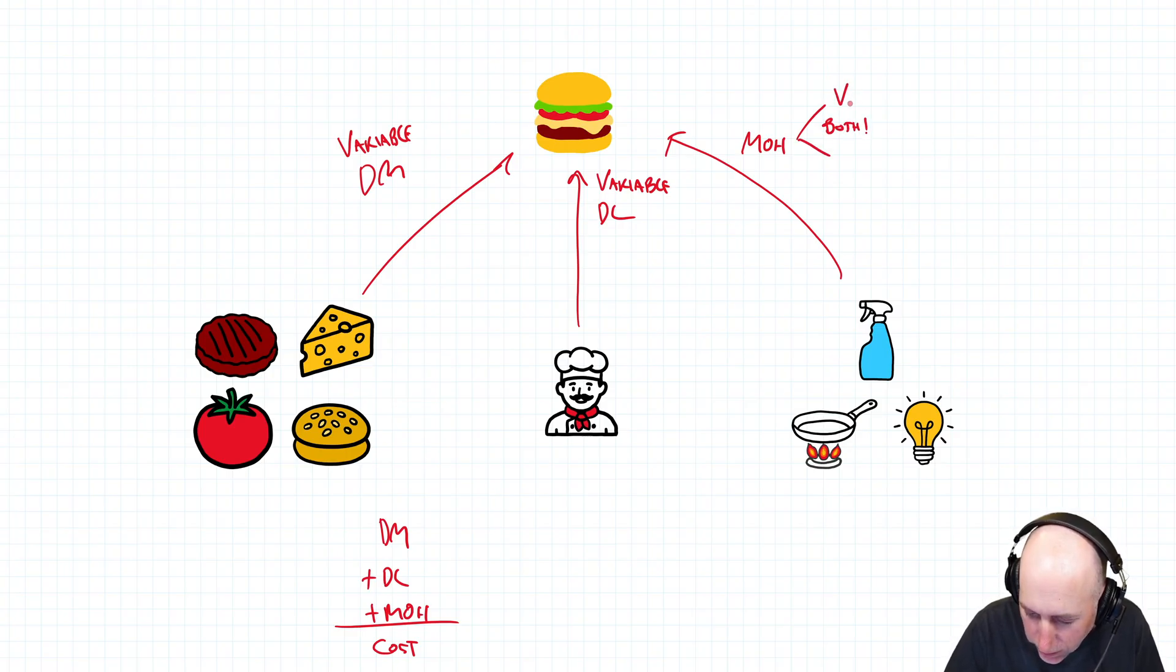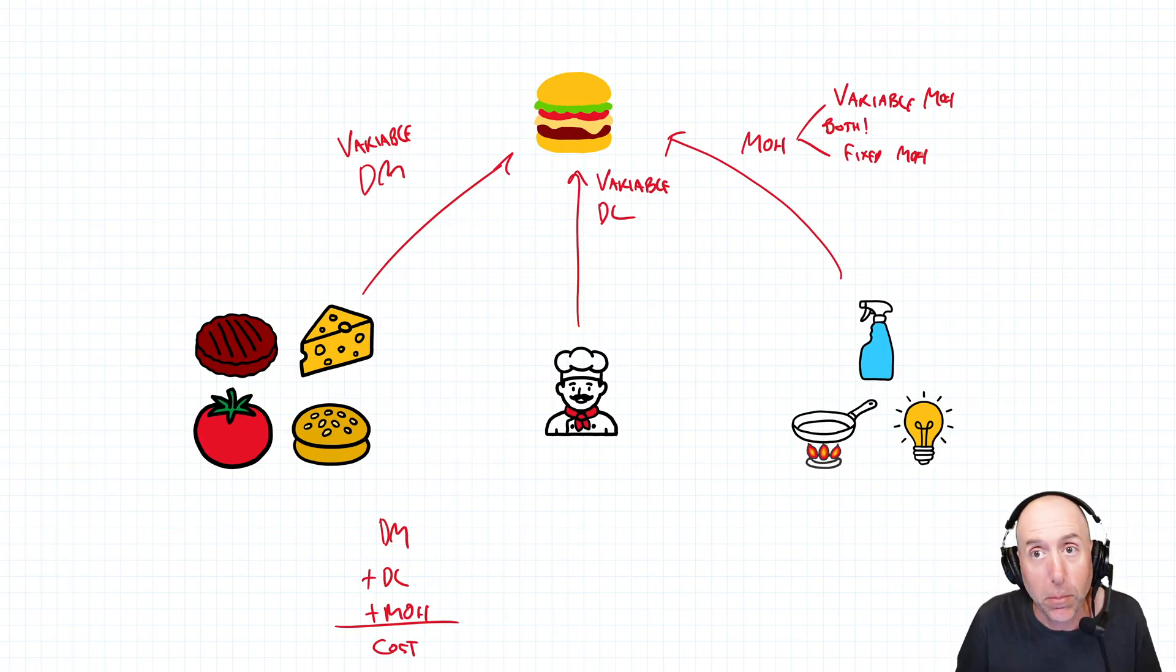So there's variable MOH and there's fixed MOH. And so this creates a small problem for us. If you think back to last chapter where we calculated break even point, we used variable and fixed cost.